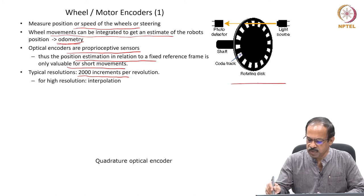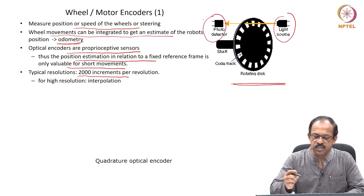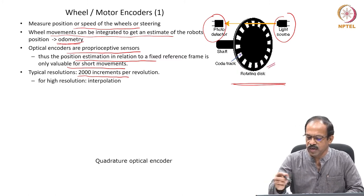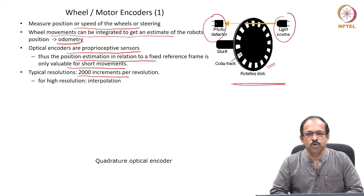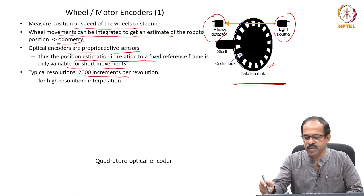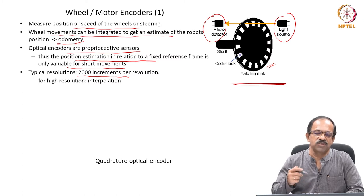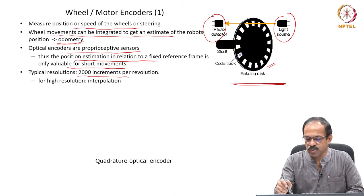As you can see in this picture, the principle is very simple. You have a light source and a photo detector — that is the optical encoder principle. There is a rotating disc with a track of cut marks which allows light to pass through and fall on the photo detector. As the disc rotates and light falls on the detector, you can count how many pulses are received, and based on that you can find out the position as well as the speed of the disc. This disc is connected to the rotating shaft, so you know how much the shaft has rotated.